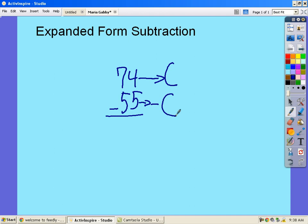Then you expand 74 into 70 plus 4. Then you expand 55 into 50 and 5. Then you put parentheses next to them.